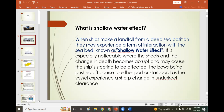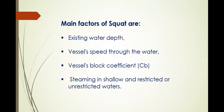What are the main factors of squat? The main factors are: existing water depth, vessel speed through the water, block coefficient, steaming in shallow ends, and restricted or unrestricted water. Those are the factors of squat. Remember the formula for squat.